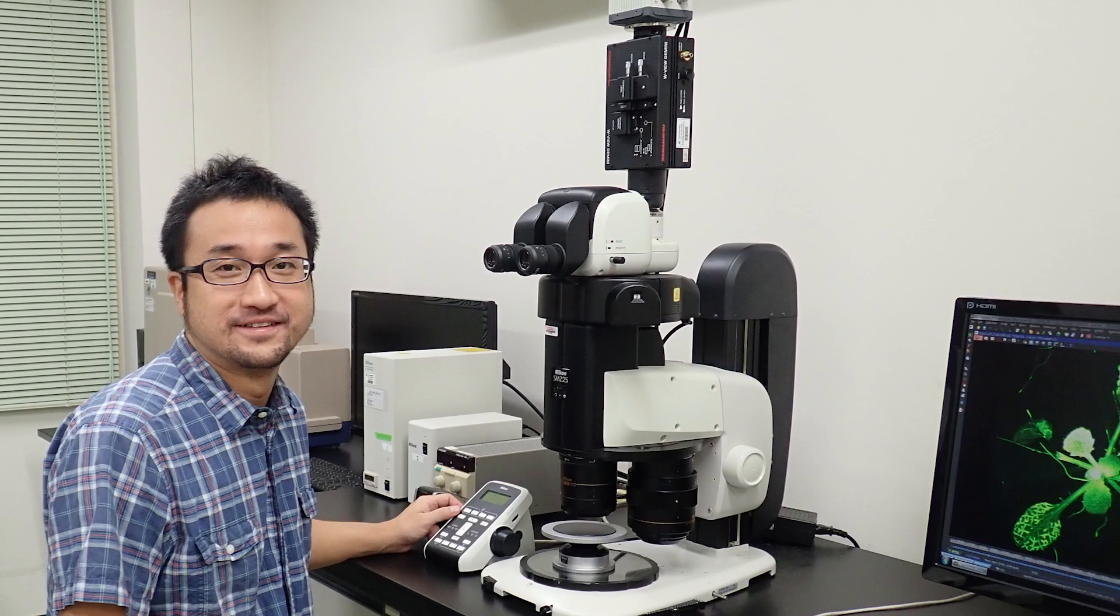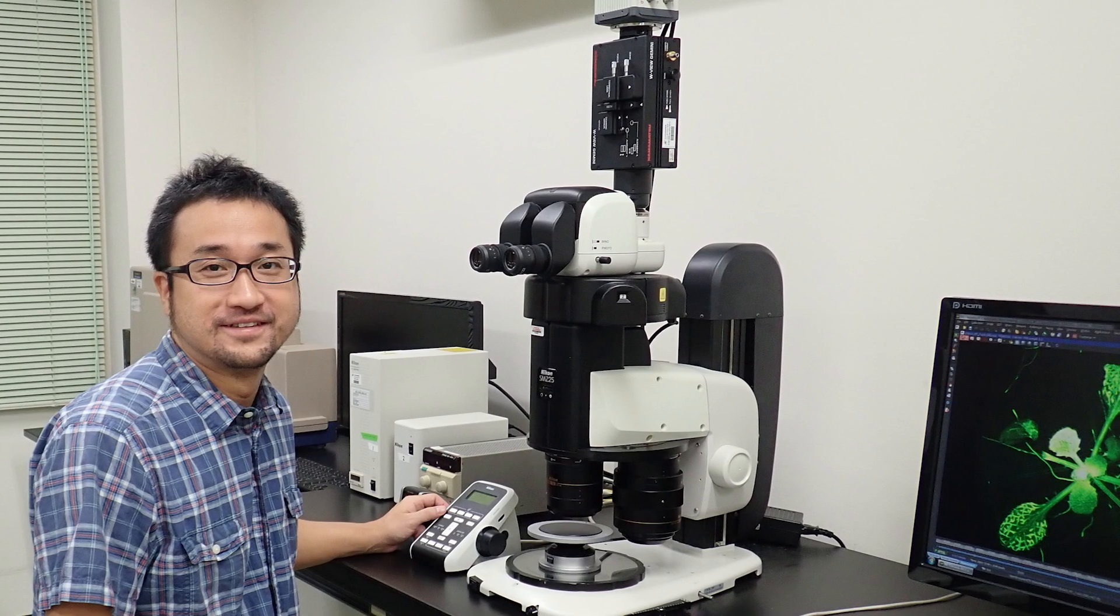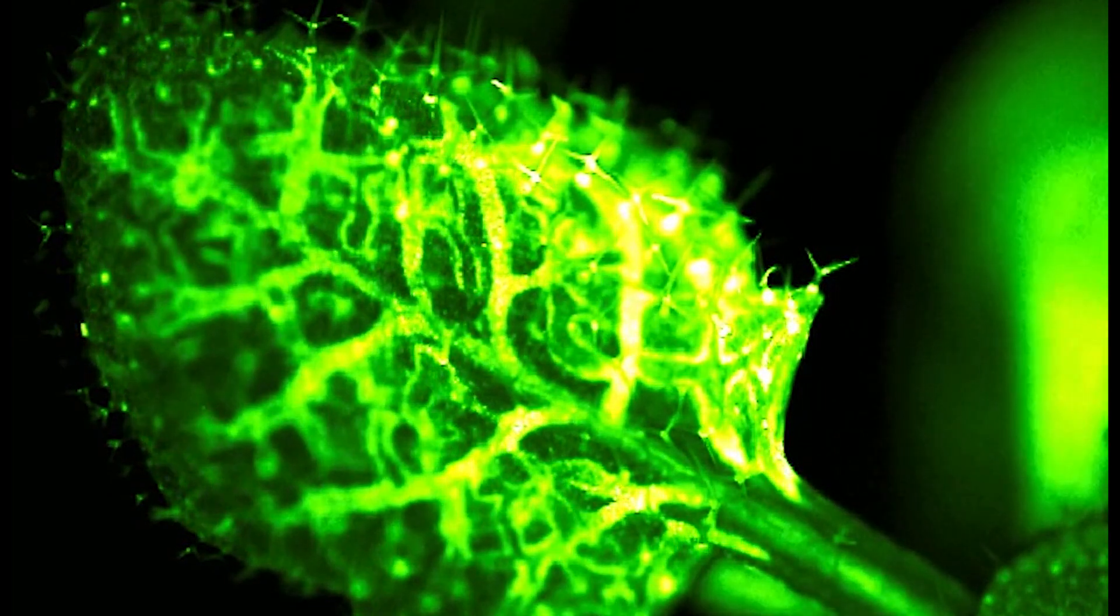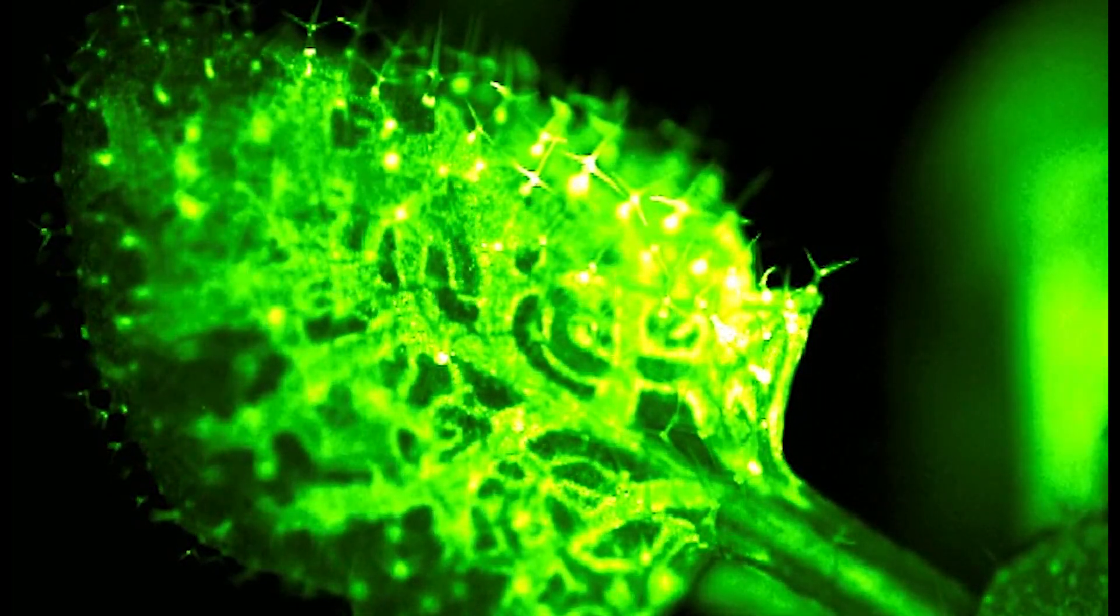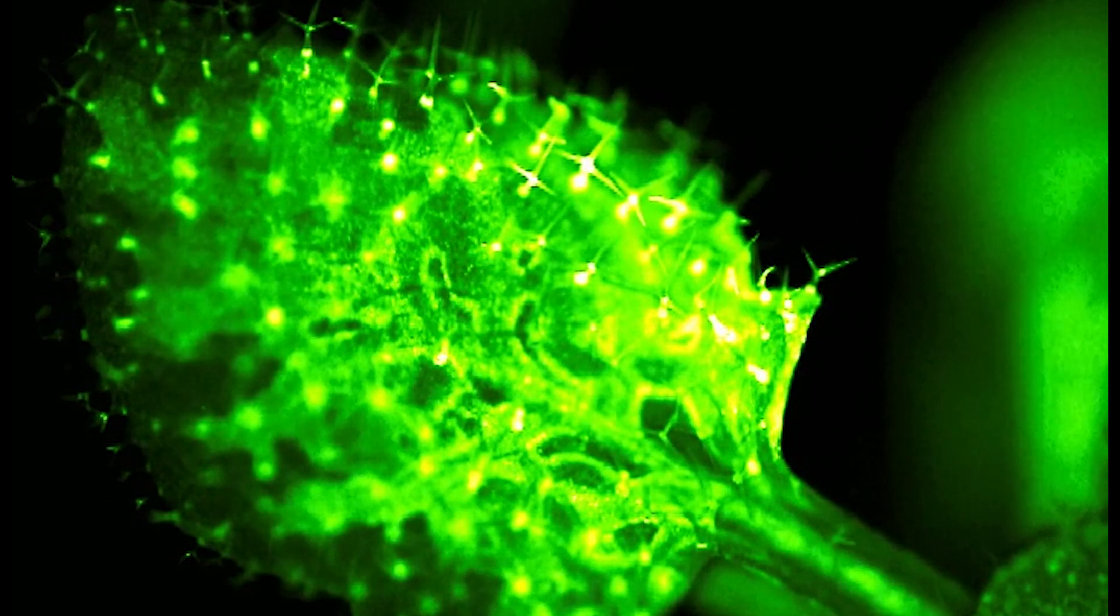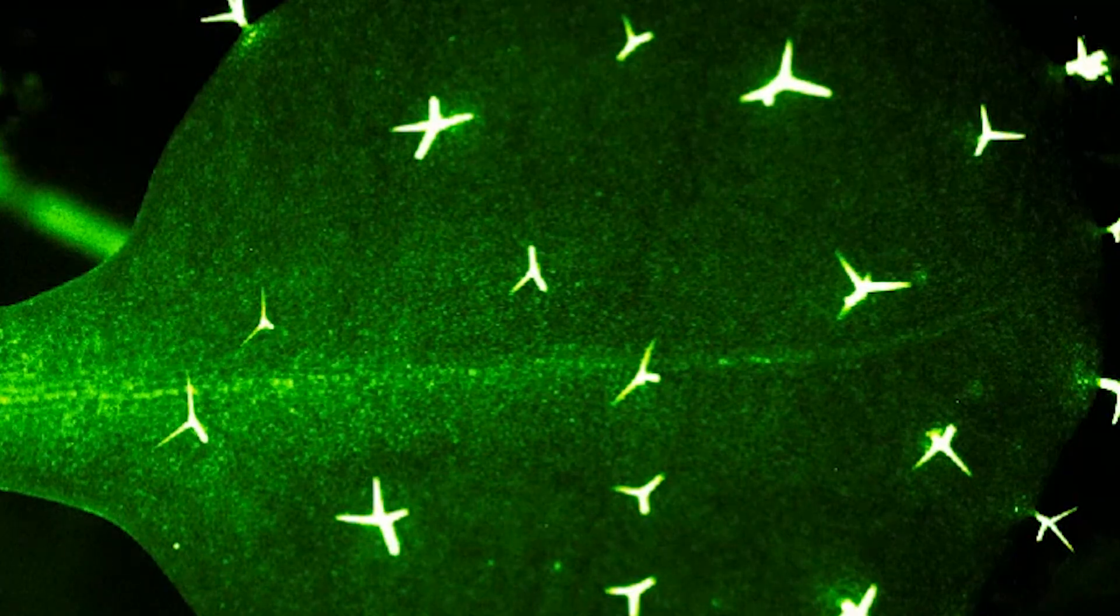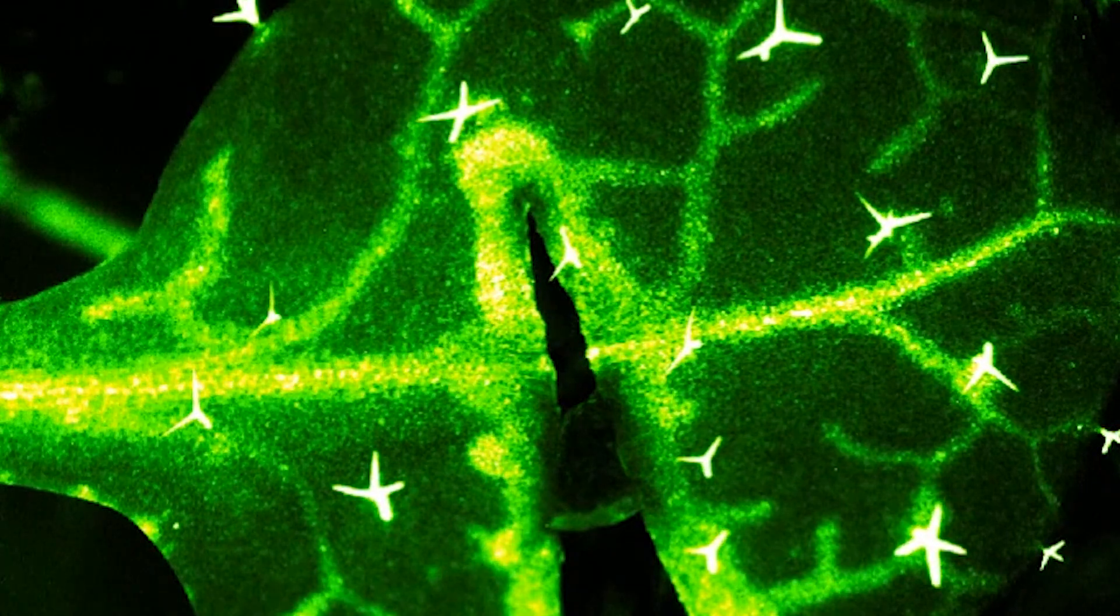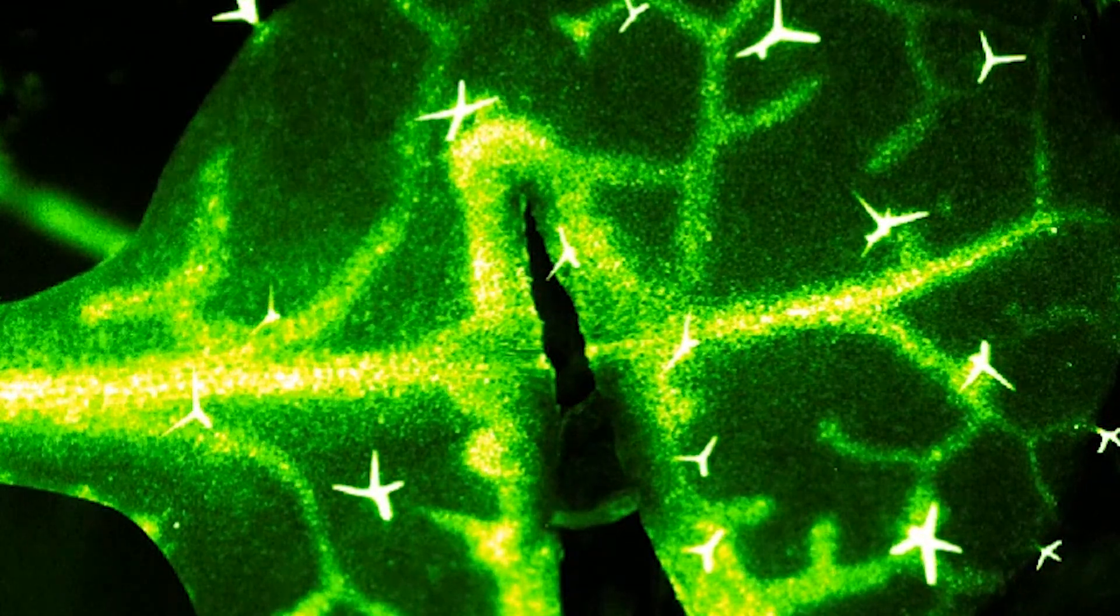Scientists made this discovery as they were investigating how plants sense gravity. They suspected calcium signaling was involved, so they genetically engineered an arabidopsis to glow brighter whenever calcium levels increased. When they observed the plant under a fluorescence microscope, they realized that calcium was dramatically increasing in response to wounding.